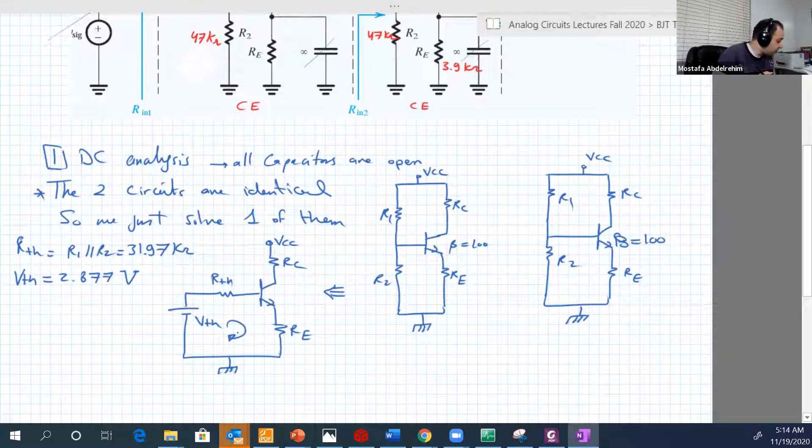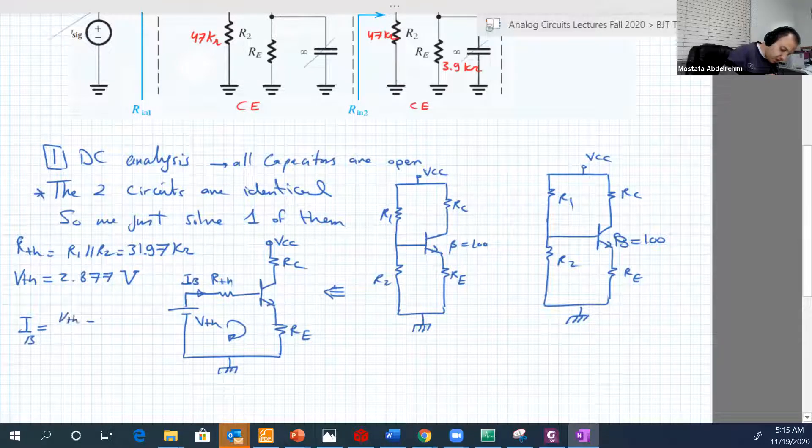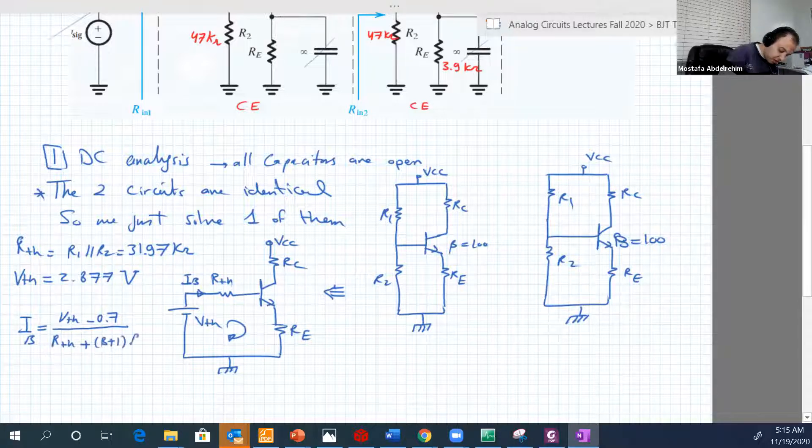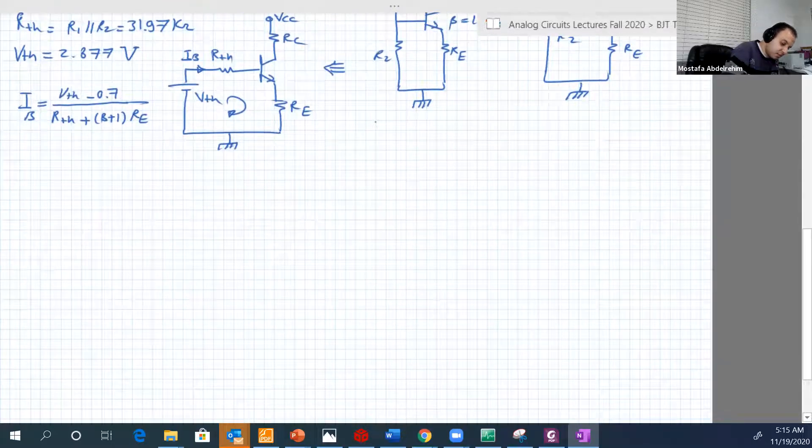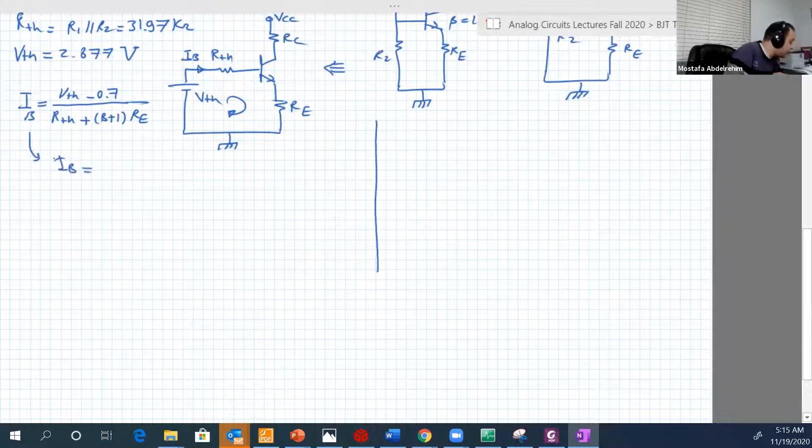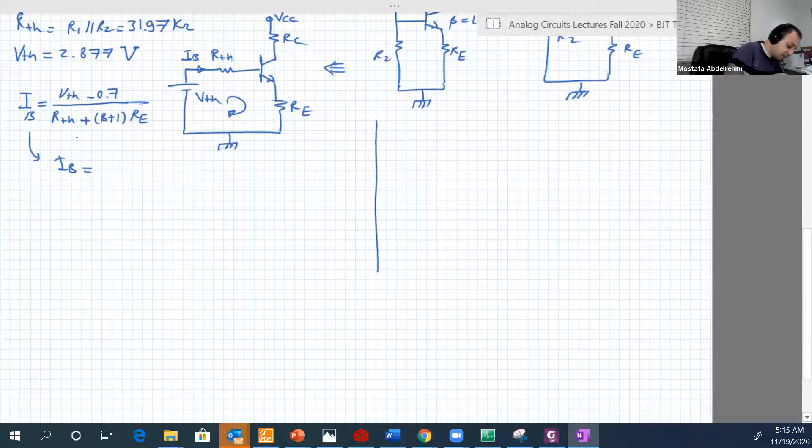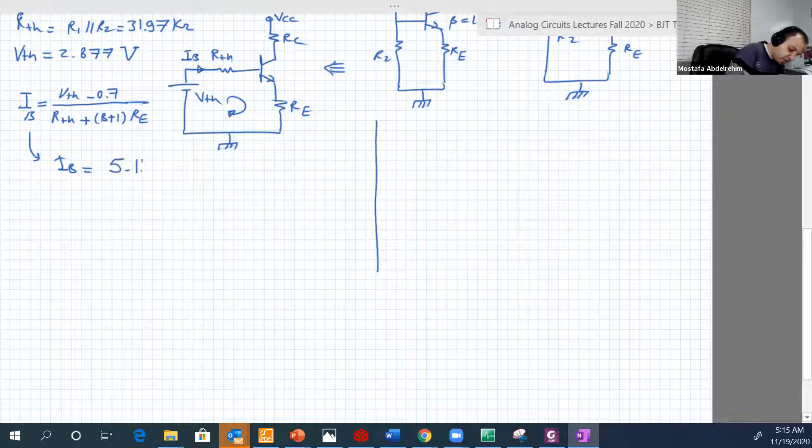So IB, which is flowing in that direction, equal to VTH minus 0.7 over RTH plus theta plus 1 RE. And based on that, let's divide this into halves. Based on that, IB will be equal to 5.11 microamperes.